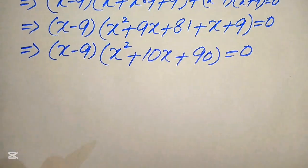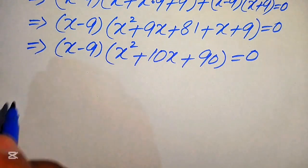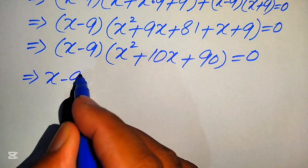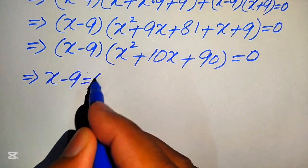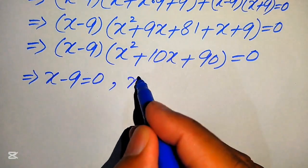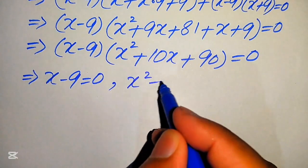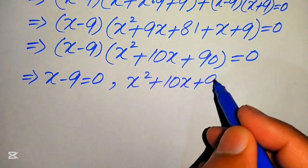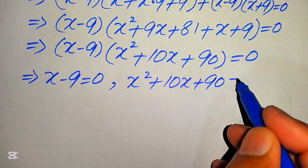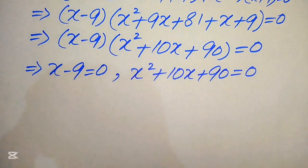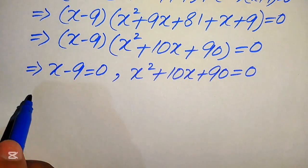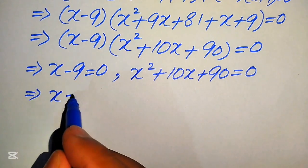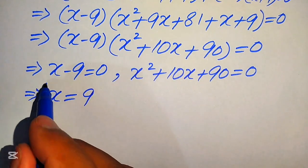We divide into two cases. Case 1: x minus 9 equals 0, which gives x equals 9. This is the first real solution of the given problem.